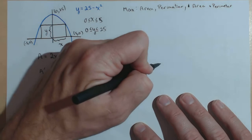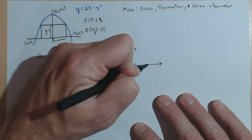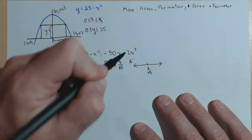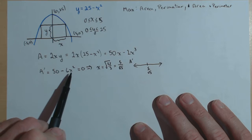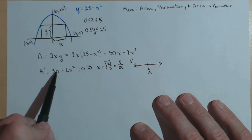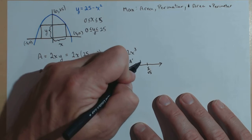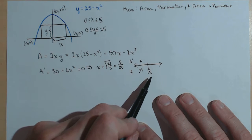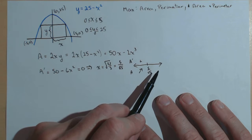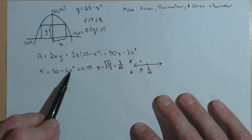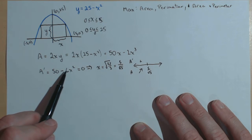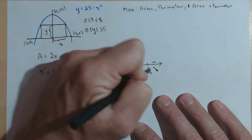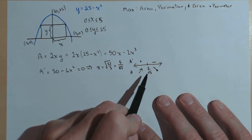Now, if we wanted to do a number line analysis on this, 5 over rad 3, well remember you check your numbers in A prime. Anything smaller, say 1, 50 minus 6 is going to be positive. So that tells me the area is increasing up to 5 rad 3, which we know is 0. Anything bigger, say 4, 6 times 16 is going to be 96, 50 minus 96, clearly negative, decreasing. So this is a relative max.